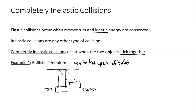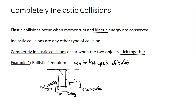The givens we have here: the height is 0.15 meters. The mass of the pendulum is 5.00 kilograms — we'll call this mass 2. The mass of the bullet is 0.050 kilograms — we'll call this mass 1. This is the state before it starts to swing, and the other state is after it's swung up. That's all the information given.